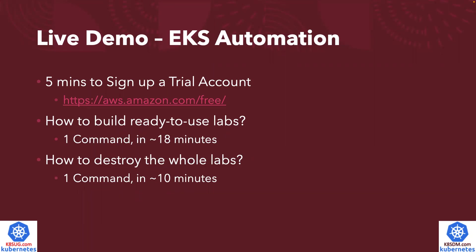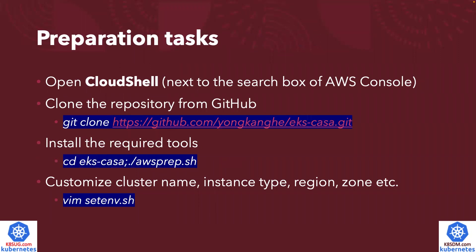If you don't have an AWS account, you can sign up for a trial account — there's a link on the screen. So a little bit of preparation tasks. First, you log into the AWS console, and next to the search box you can click to open Cloud Shell. Once you open Cloud Shell, you can clone the repository from a GitHub page — it is publicly available. Then you can install the required tools and just run the command.